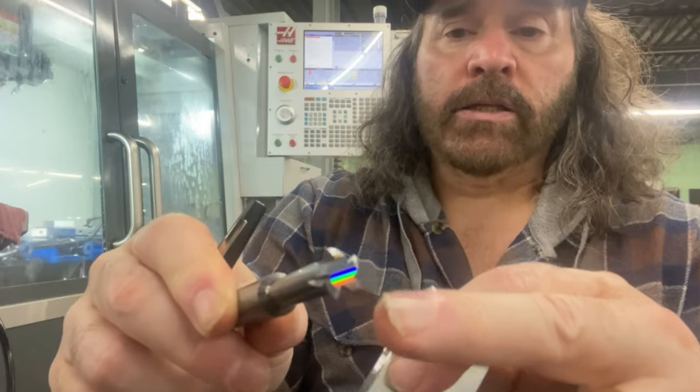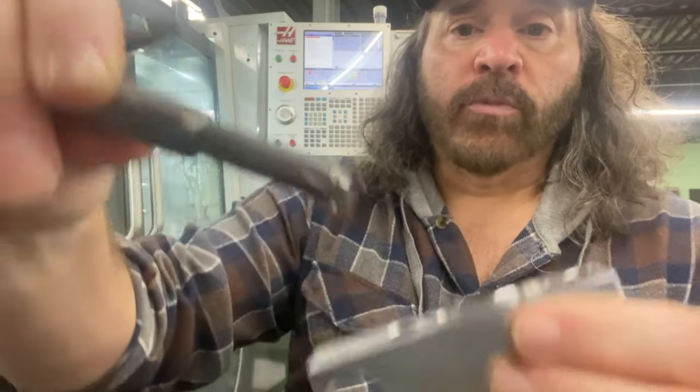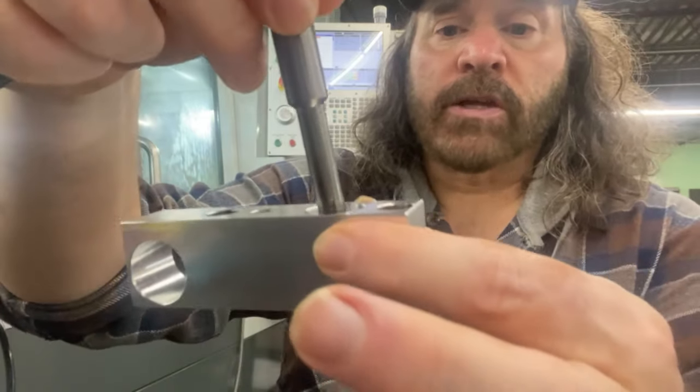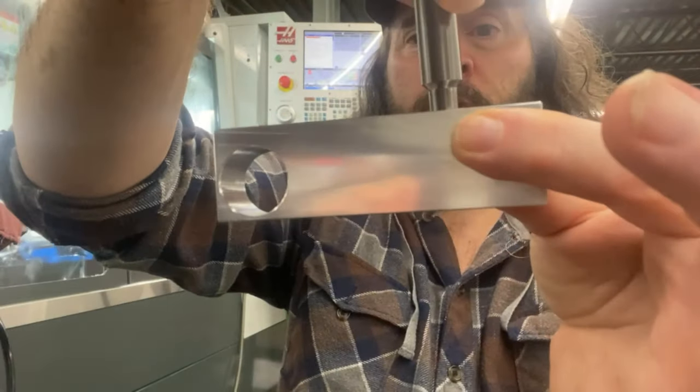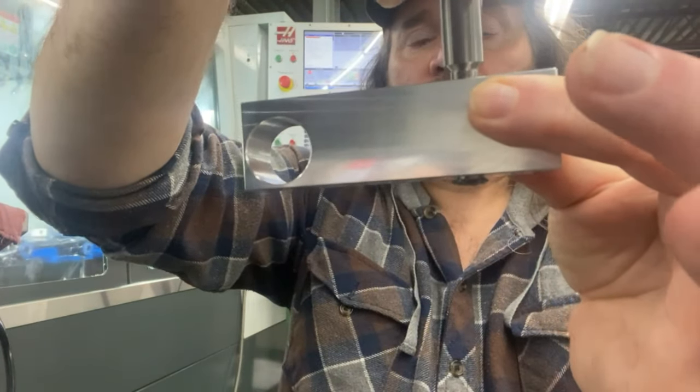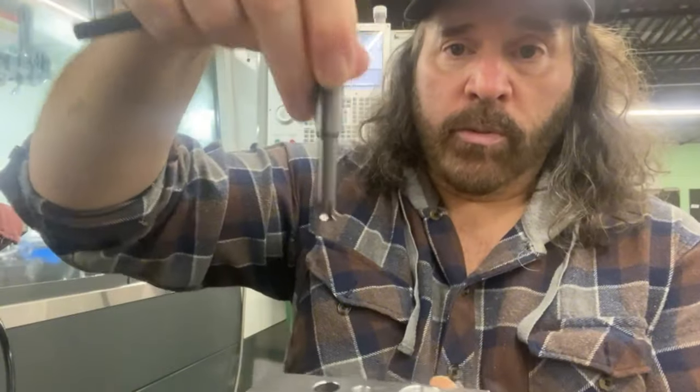The thread mill is a 0.488 diameter and you have to make sure obviously if you're going to do this, it's got to go all the way through and be able to interpolate coming up doing the thread.